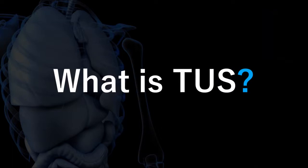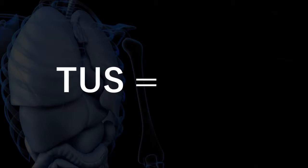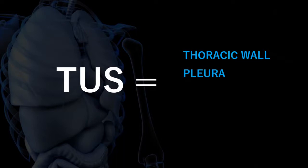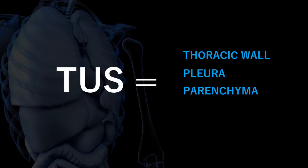For me, thoracic ultrasound covers a lot more of the thoracic structures than just the lung. It covers the thoracic wall - your subcutaneous tissue, your intercostal muscles and your ribs. It also includes the pleura, so you have two layers: the parietal and the visceral. One is against the chest wall and the other surrounds the lung. Then you also have the lung tissue itself and the diaphragm, to make sure there isn't any pathology or functional deficit around there.